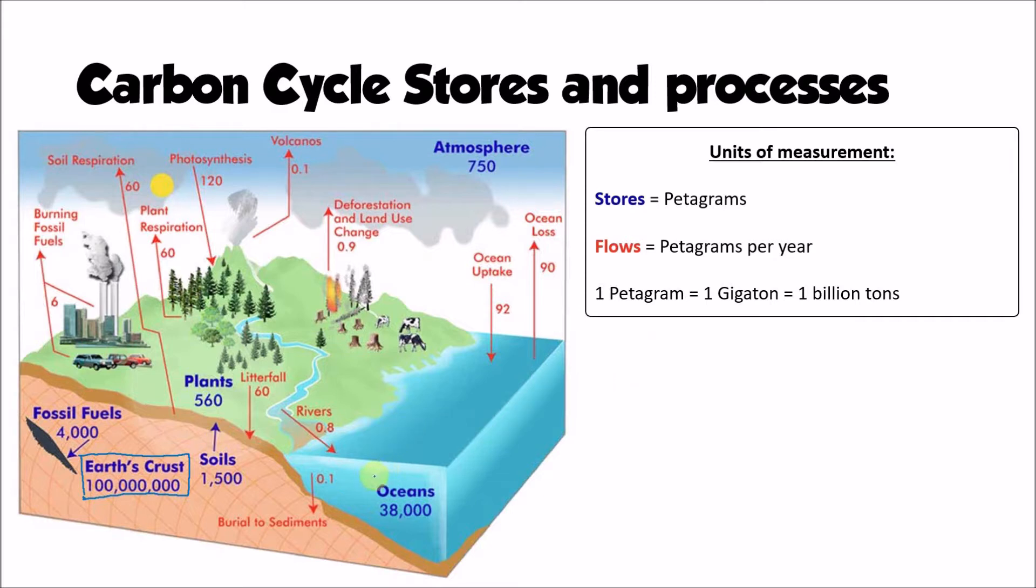The second largest store is the oceans. Now the oceans are important in terms of exchanging carbon with other stores, particularly with the atmosphere. So 38,000 petagrams of carbon is stored within the oceans. Most of that carbon is dissolved within the water or possibly forms part of some of the marine creatures that live within it.